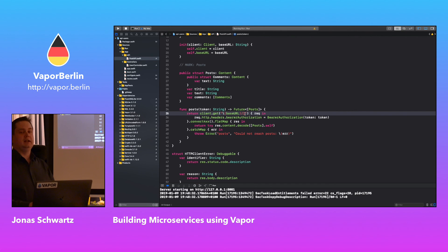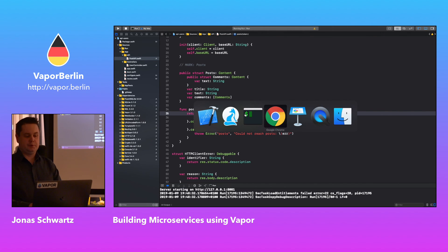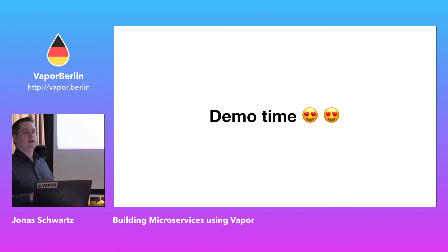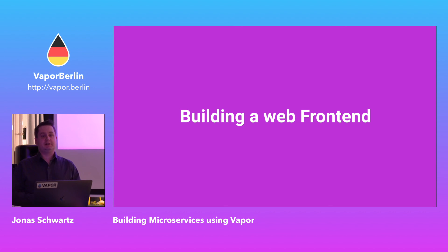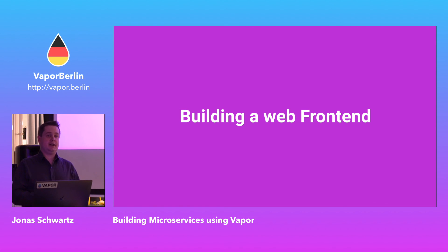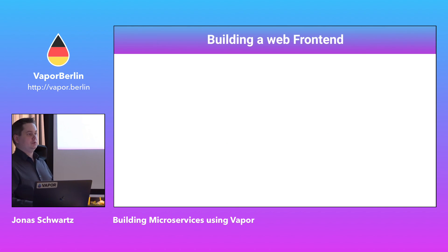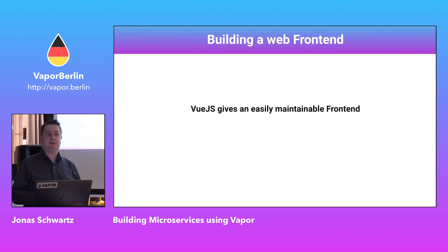All of the microservices work completely independent of each other, which is one of the beautiful things about microservices — they can interact completely on their own without needing to think about each other. One final thing: if you are building a big next application, we have started spending a lot of time using a JS frontend instead of Leaf. Leaf is a great tool for sending emails and doing simple web things, but we have started using a JS frontend. We use Vue.js.